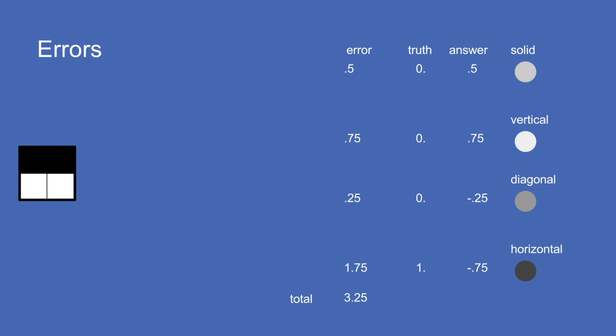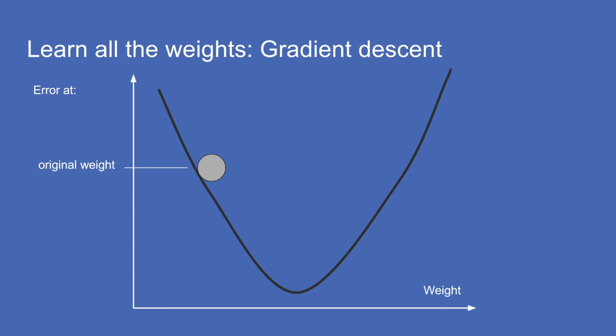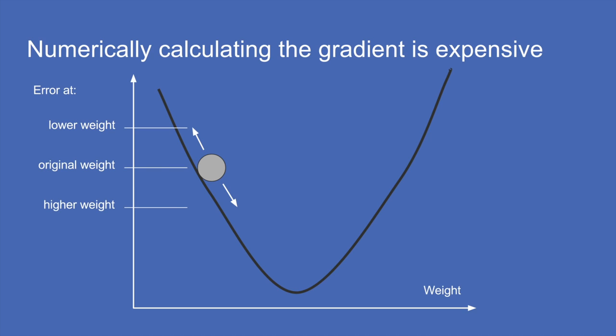The whole idea with learning and training is to adjust the weights to make the error as low as possible. We put an image in, calculate the error at the end, then look for how to adjust those weights higher or lower to make the error go down. The problem is that each time we go back and calculate the error, we have to multiply all of those weights by all of the neuron values at each layer, and we have to do that again and again once for each weight — this takes forever in computing terms and is not a practical way to train a big neural network.